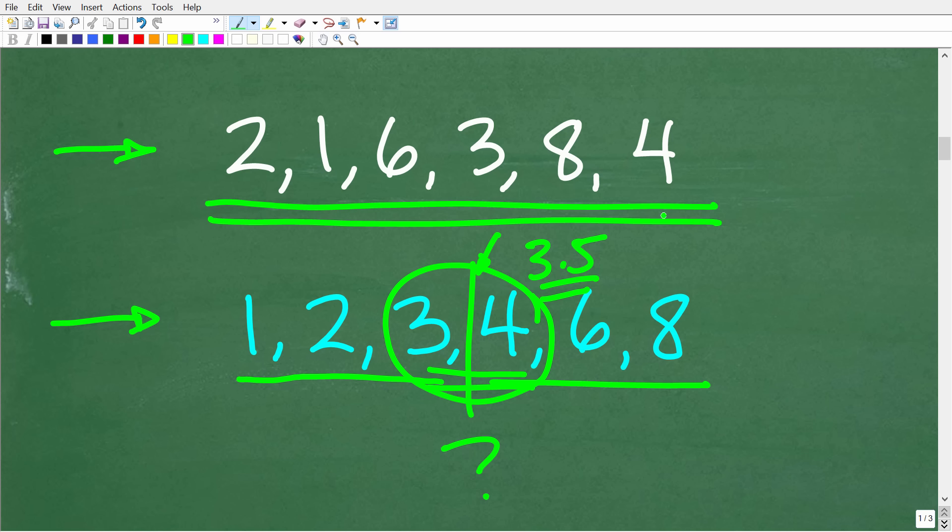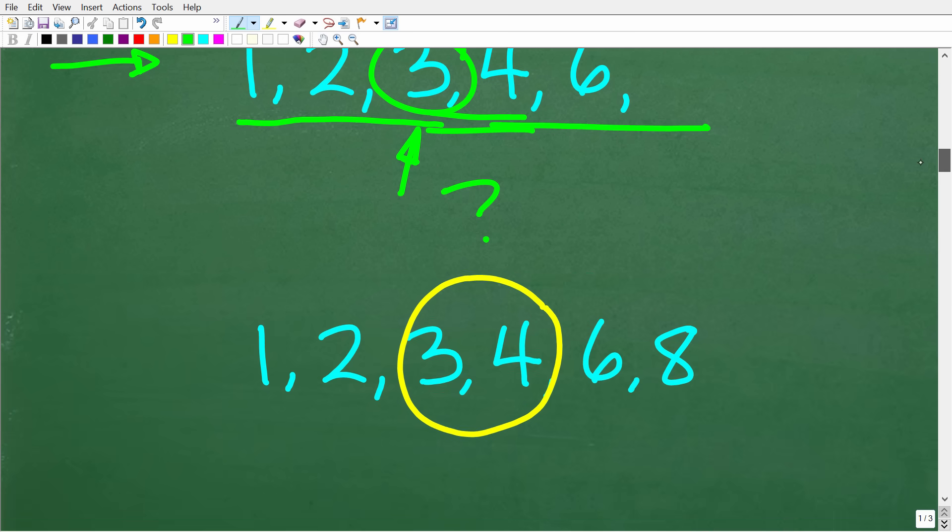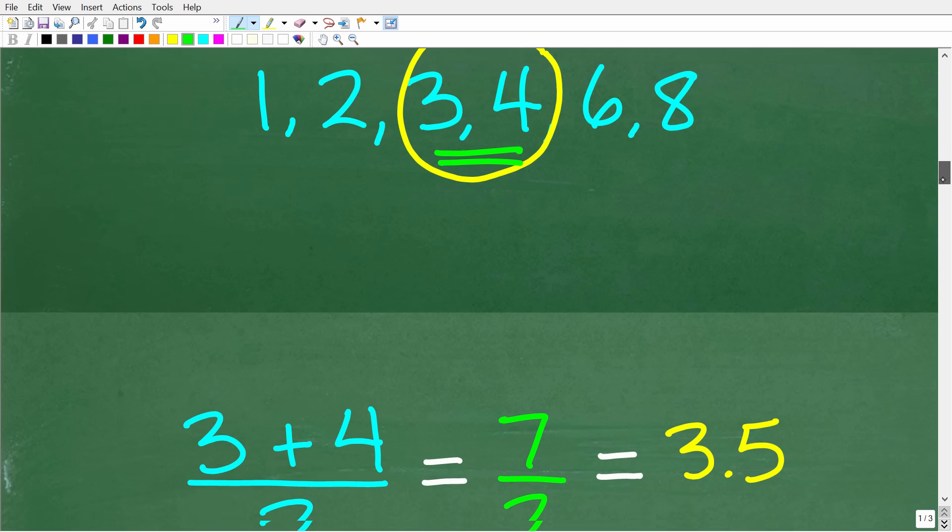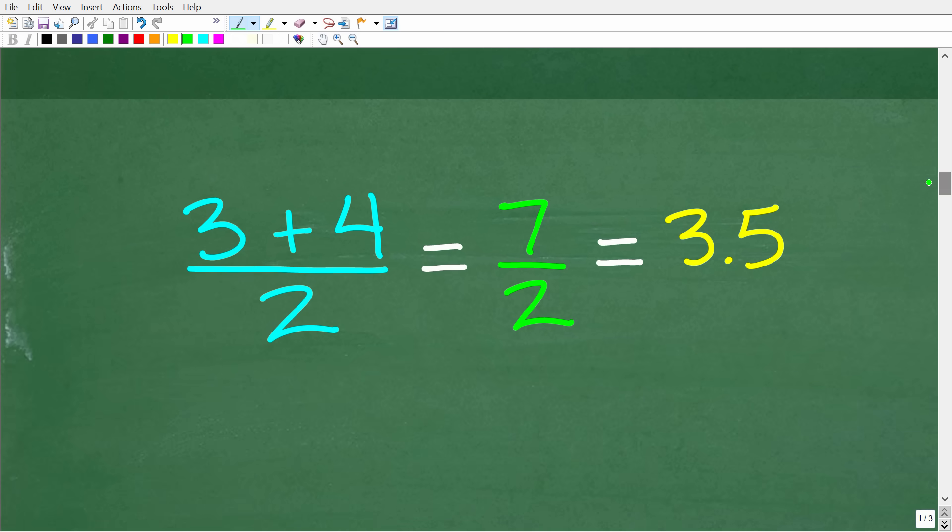Now, if you had an odd number of numbers, matter of fact, let's get rid of this 8 here. So if we wanted to calculate the median or identify it, we would have a simple clear winner as the middle value, which would be 3. Okay, so again, if you have an even number of data in your data set, you just simply have to average the numbers closest to the middle. So the average of 3 and 4 will be 3 plus 4 divided by 2. So that's 7 divided by 2, which is 3.5.